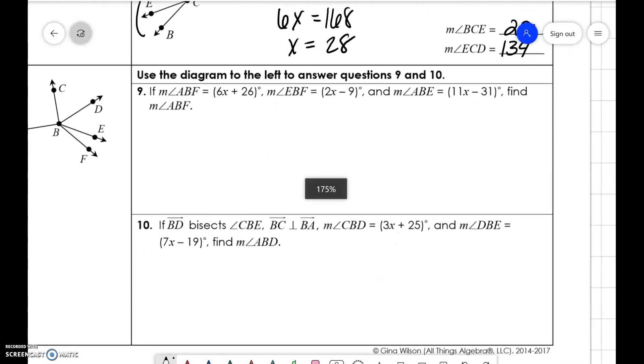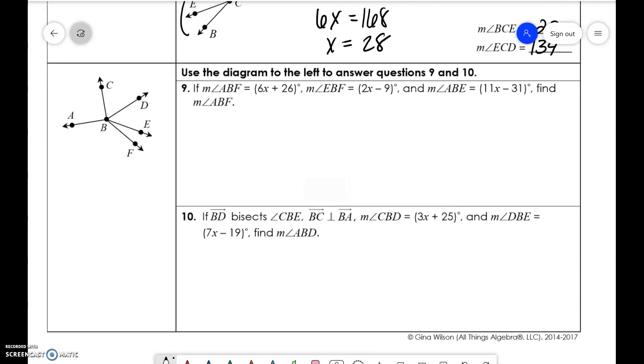Okay. Last two problems. They're a little bit challenging, but we're going to use this diagram here to the left to answer the problems. So ABF. So ABF. So I'm going to use color coding. So ABF is here. That's 6x plus 26.